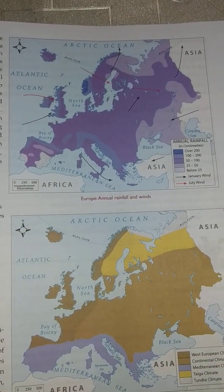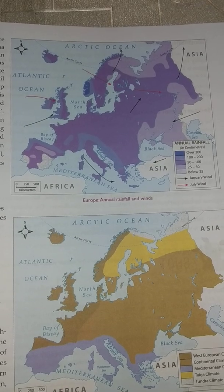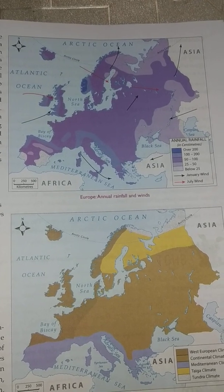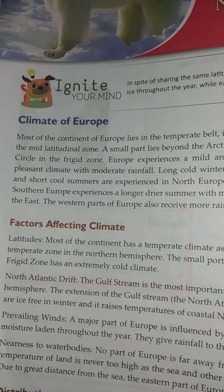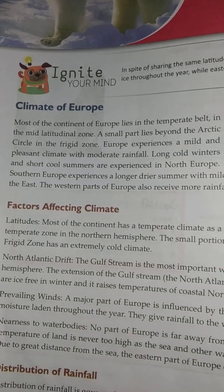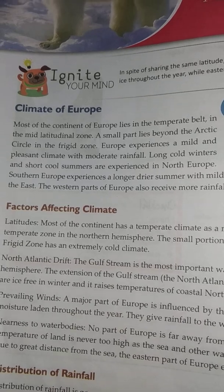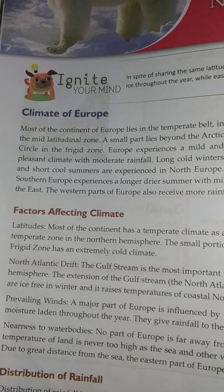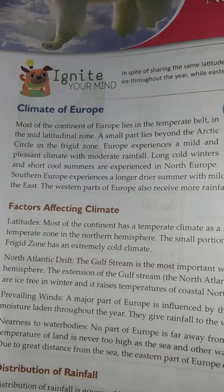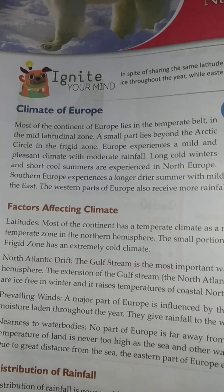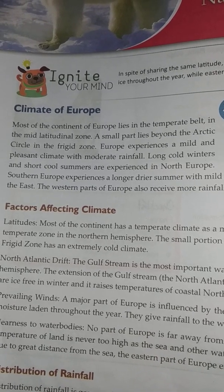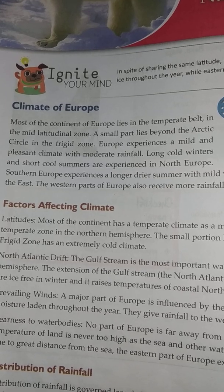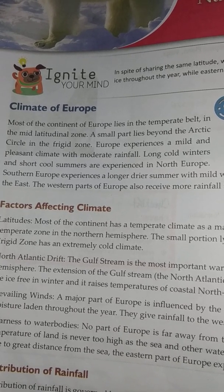The western side is close to major water bodies, seas and oceans, and so they enjoy a maritime climate. Except the northern part which comes under the frigid zone, the other parts of Europe experience a mild and pleasant climate with moderate rainfall. Long cold winters and short cool summers are experienced in North Europe.